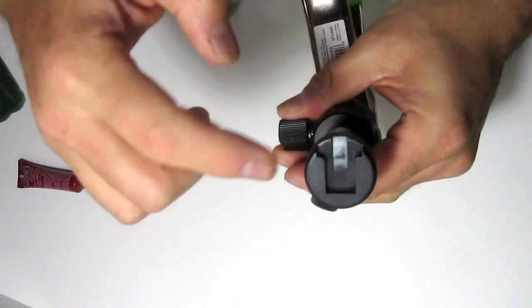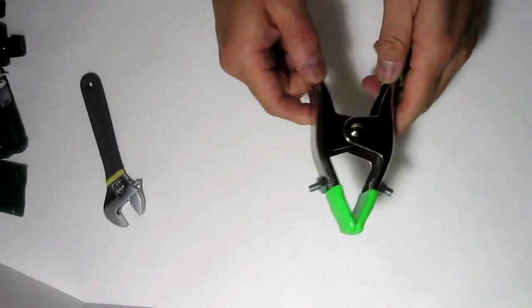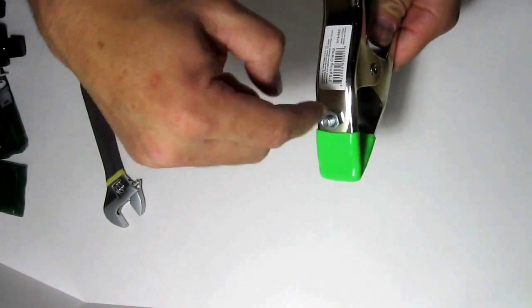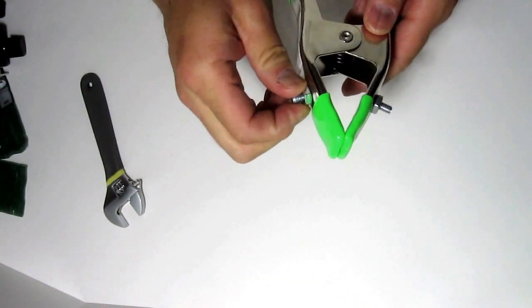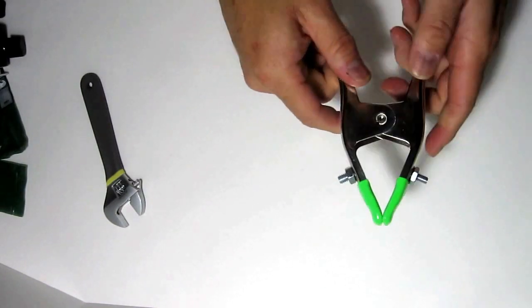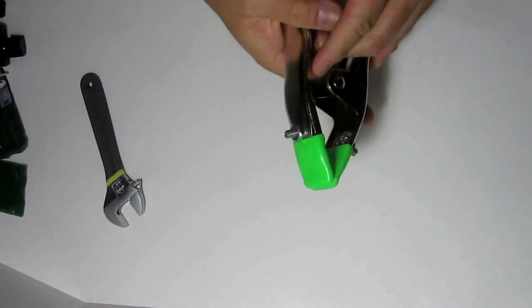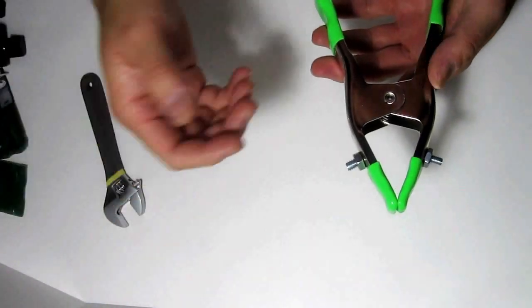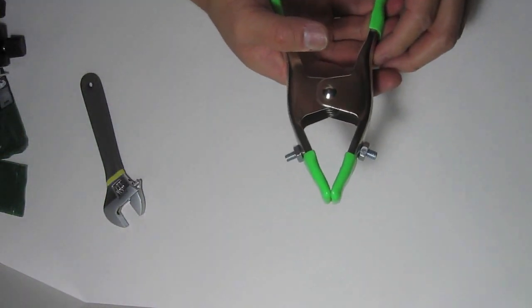So as you can see this is the final product—it's very simple. The Loctite that I put on there will take two hours to dry but it'll take 24 hours to cure, so just leave it alone overnight and you're good to go. This will never come off and you can clamp this onto any shelf that you see and you can use your flash on that. So I hope you enjoyed the show and I'll talk to you soon. Thanks!